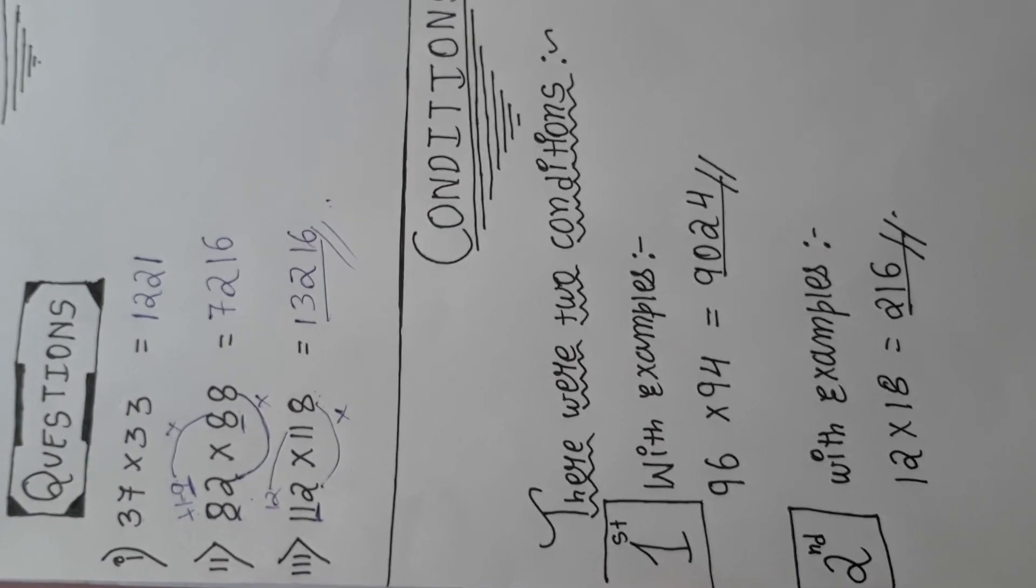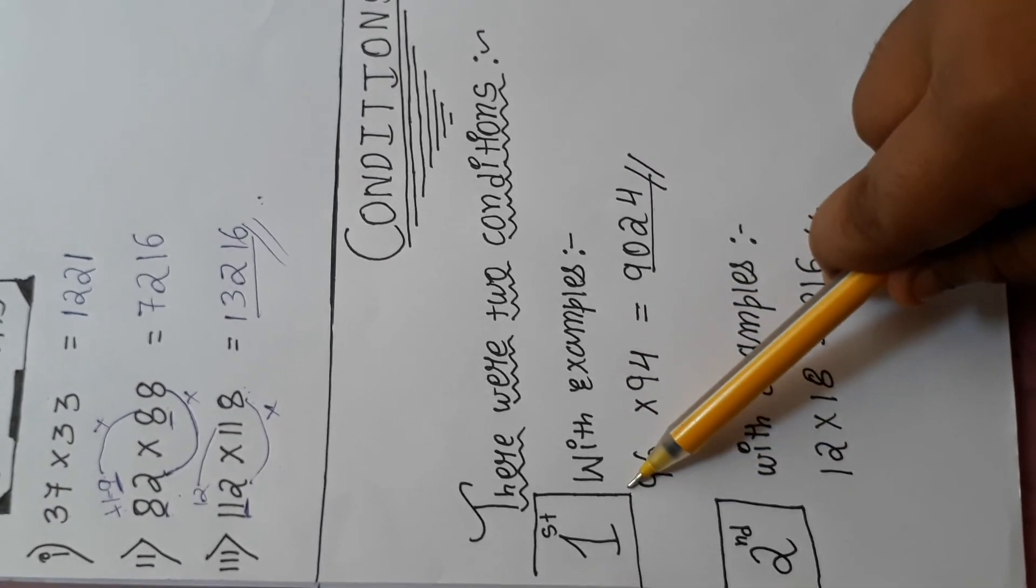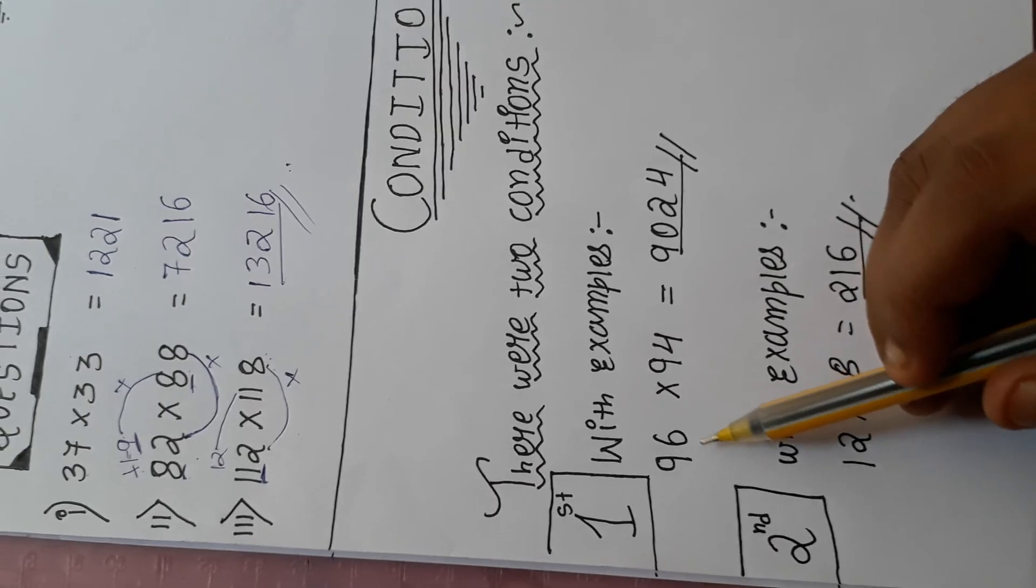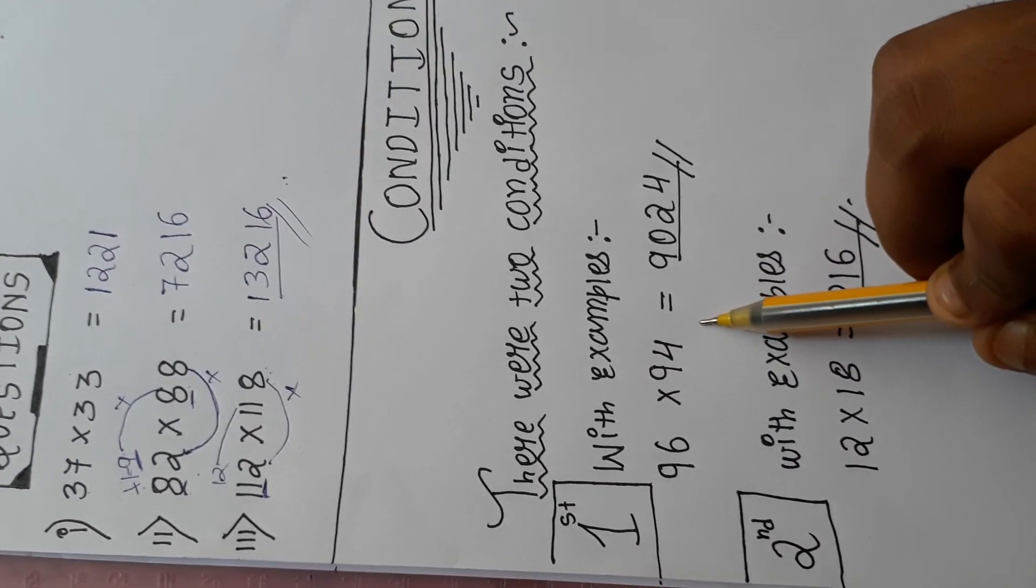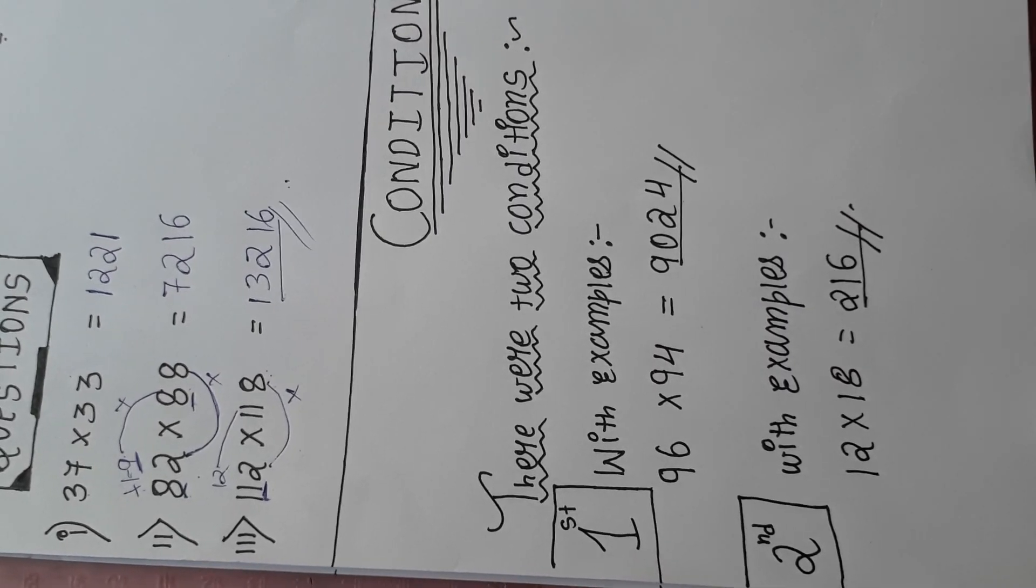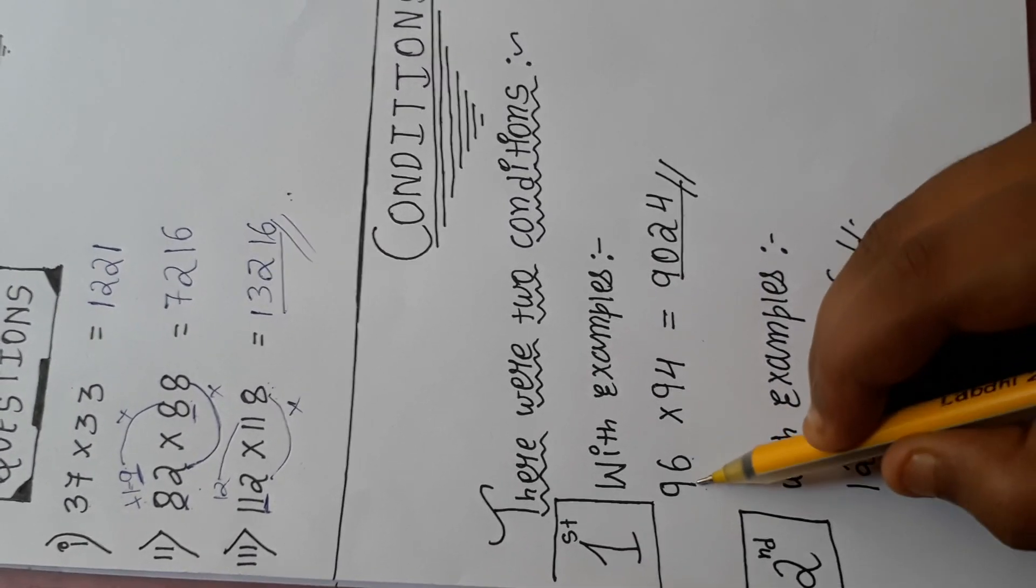And there were two conditions also, friends. I will explain you with the examples. We will see the first condition. Suppose the question is like 96 into 94 or else 12 into 18. It might be any question. This second place, it is the first place, it is the second place.